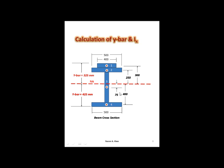We have 600 for the center member, divided by 2 gets from here to that point, then add 50, giving us 350. 425 minus 350 gives you 75. For the next y-bar, the distance from the centroid to the neutral axis: take 425 minus half the height, which is 25, giving you 400.